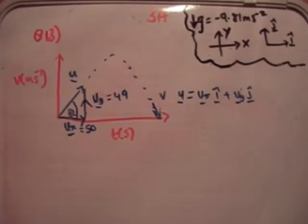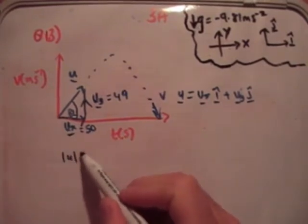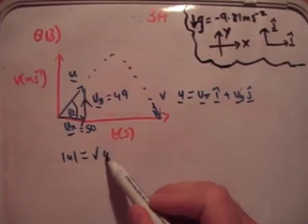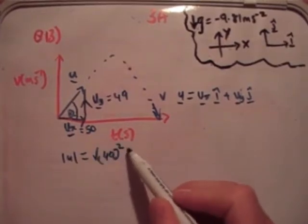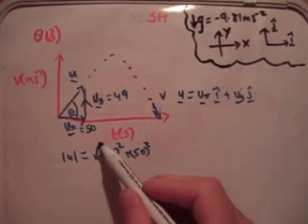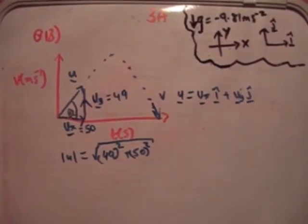Just as a matter of interest, let's find the magnitude of the velocity itself. This is just a right-angled triangle. So the magnitude of u is equal to the square root of 49 squared plus 50 squared. Remember it's just a bit of Pythagoras theorem.